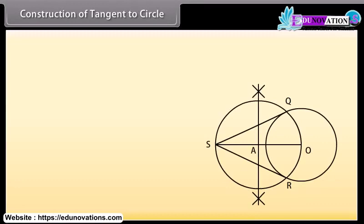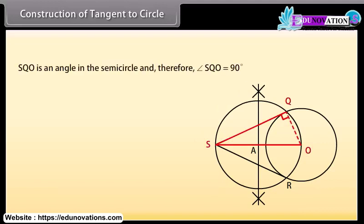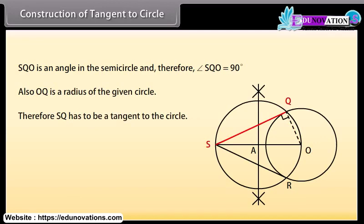Let us now check how this construction provides us the required tangents. Join OQ. We can see that angle SQO is an angle in the semicircle, and therefore angle SQO is equal to 90 degrees. Also, OQ is a radius of the given circle. Therefore, SQ has to be a tangent to the circle. Similarly, we can say that SR is also a tangent to the circle.